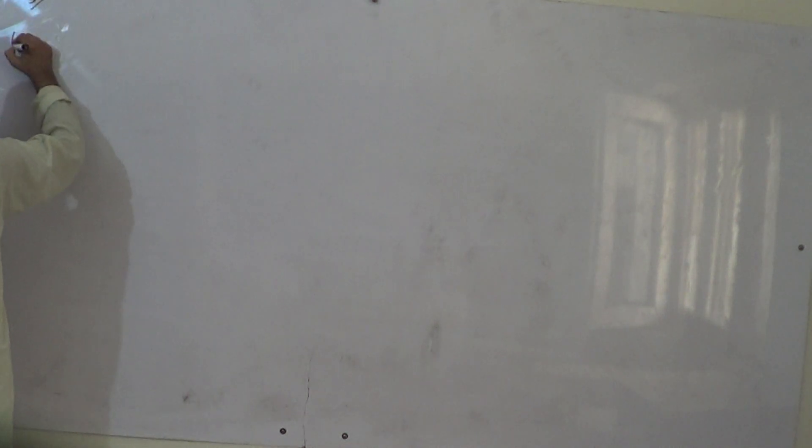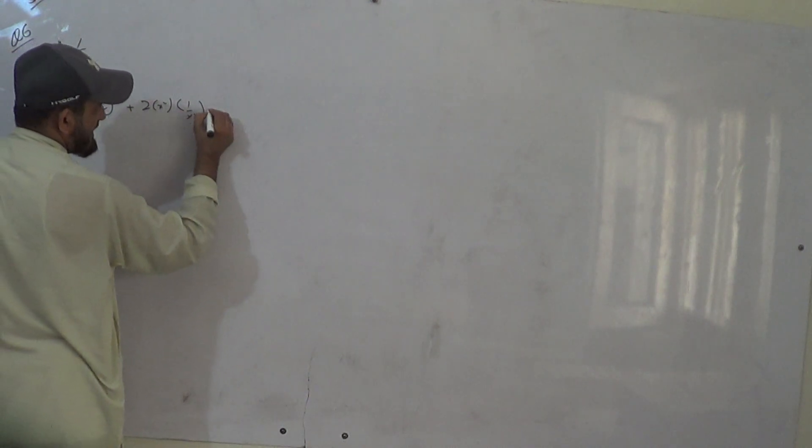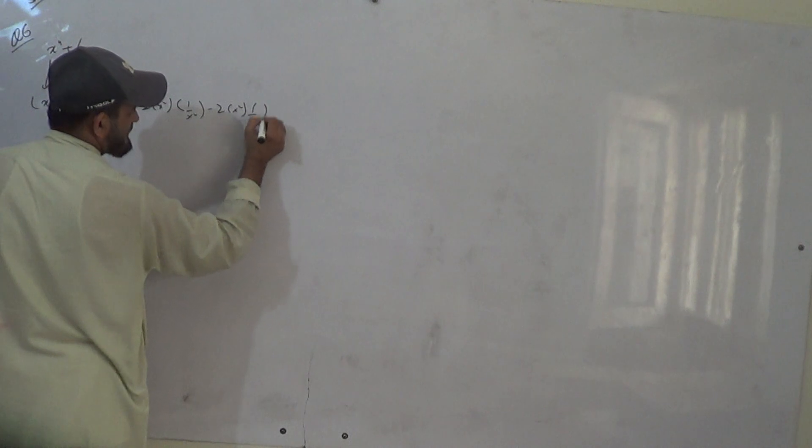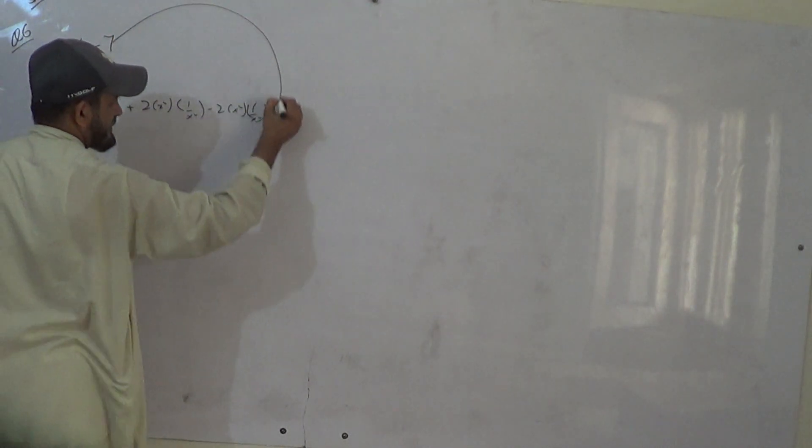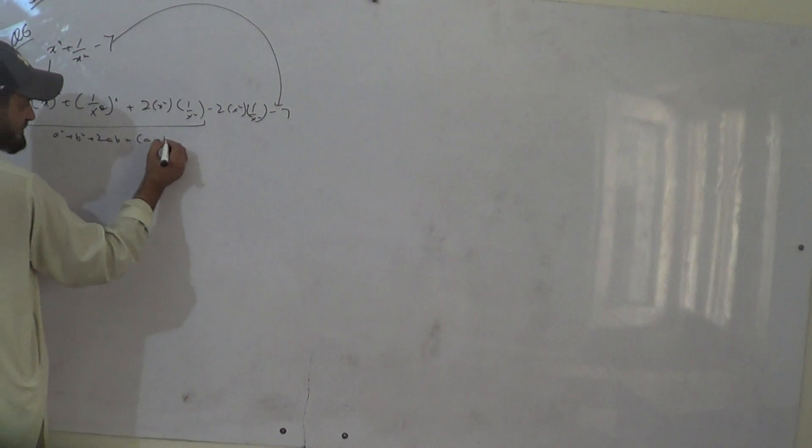5.2, question number 6. x to the 4 plus 1 by x to the 4 minus 7. Now we take these two terms. Minus 1 is not here. It will be a square plus b square minus 2ab. Minus 1 is here, come here. What it will be? a square plus b square minus 2ab equal to a minus b whole square.